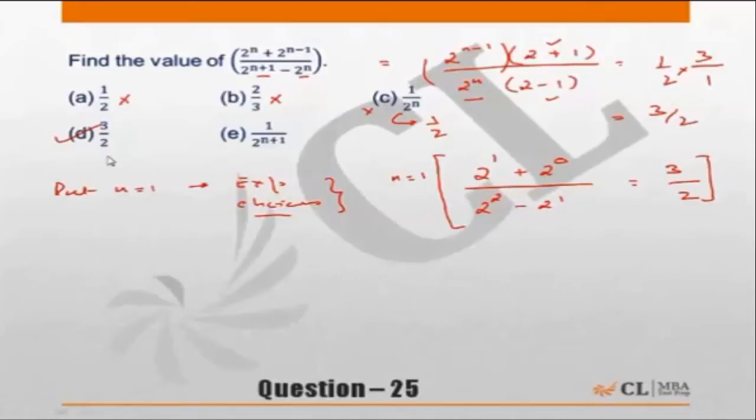Choice d is 3 by 2, so hold on with it. Choice e is 1 upon 2 square, which is 1 upon 4, so incorrect. So the correct answer has to be choice d.